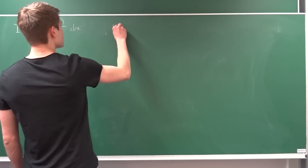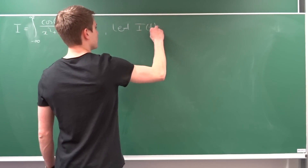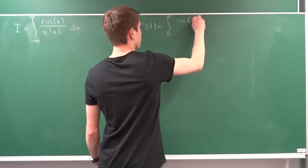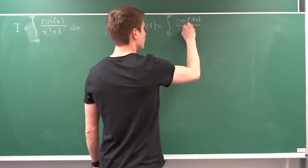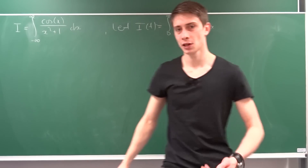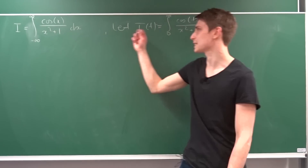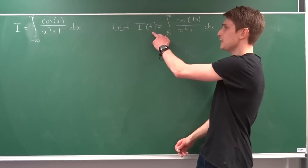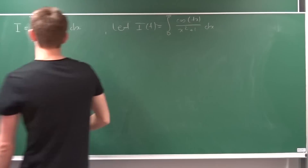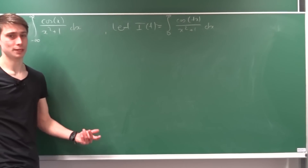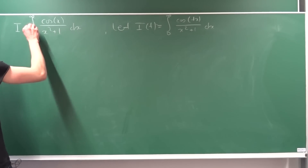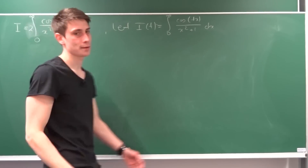We let I in terms of t equal to the integral from 0 to infinity of cosine of t times x over x squared plus 1, dx. Now you might ask how is this the same as our original integral? Well, if we let t equal to 1 we get the same argument in the cosine. Also, you might notice this is an even integrand — if we plug in minus x we get the original integrand — so we can rewrite it as the integral from 0 to infinity but times two.